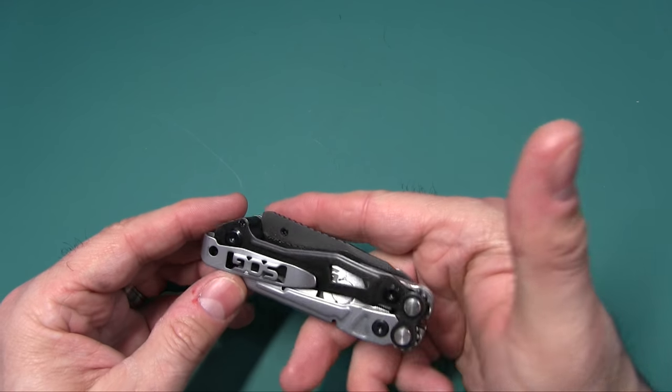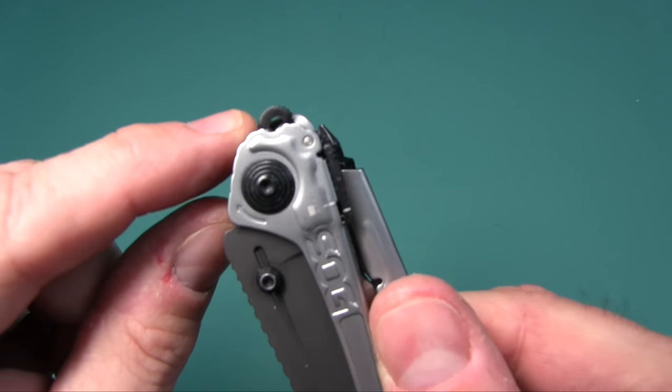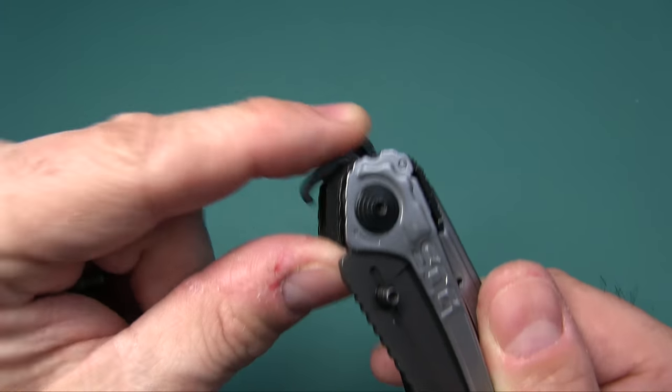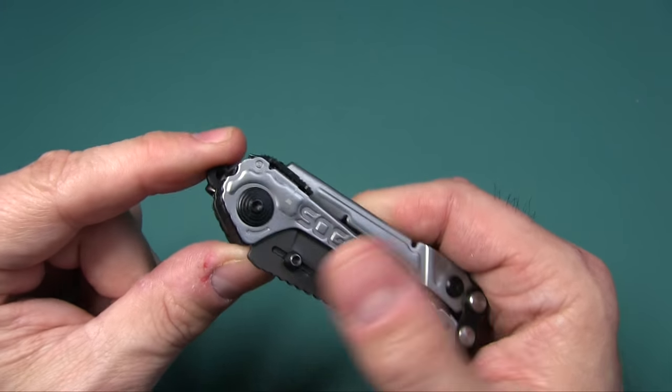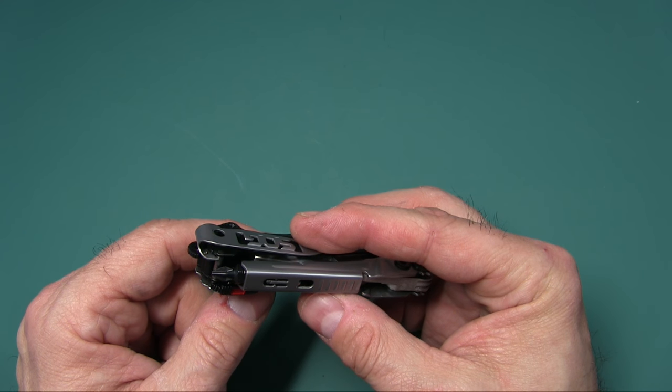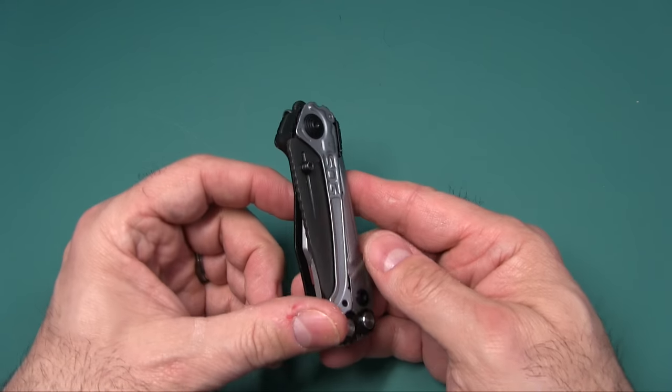And I think that is really, oh, they count the lanyard hole. Where is the lanyard hole on this thing? Oh, okay. There it is, right there. There's the lanyard hole. I guess the lanyard hole is part of the bottle opener. Alright, so I think that really is about it as far as all the different things.